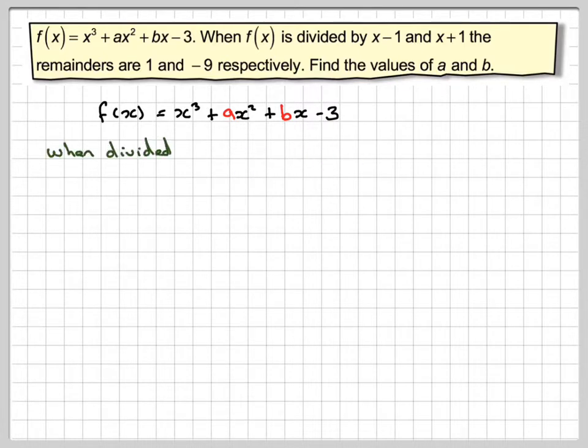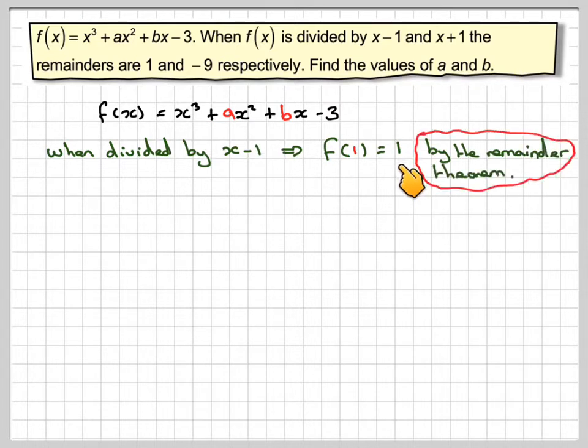If we now use the remainder theorem, when divided by x minus 1, that means that f of 1, if we put 1 in here, we would get an answer of 1 by what's known as the remainder theorem. So if we now substitute 1 in here, we're going to get 1 cubed plus a times 1 squared plus b times 1 minus 3, and the answer to that has to be equal to 1.